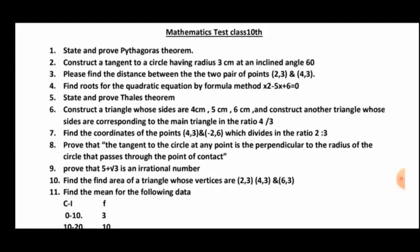Read the questions, understand them, and solve carefully to take the marks. The next question: find the coordinates of the point that divides (4, 3) and (−2, 6) in the ratio 2:3 — that is the section formula. It is also an important question for 2 marks. Apply the data to the section formula and solve it.